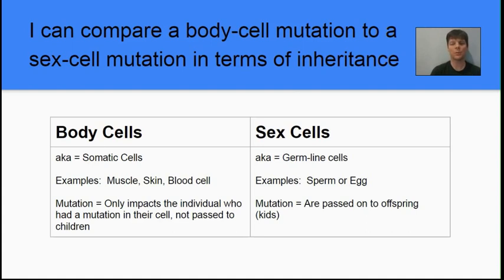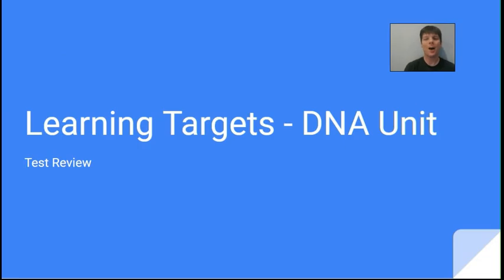Germline cells are sex cells — examples in humans are sperm or egg cells. If there's a mutation in a germline cell, that mutation will be passed on to offspring and will show up in all the cells of those offspring. Thanks for watching this review of the learning targets for our DNA unit. I hope the video was helpful. Bye, everybody.